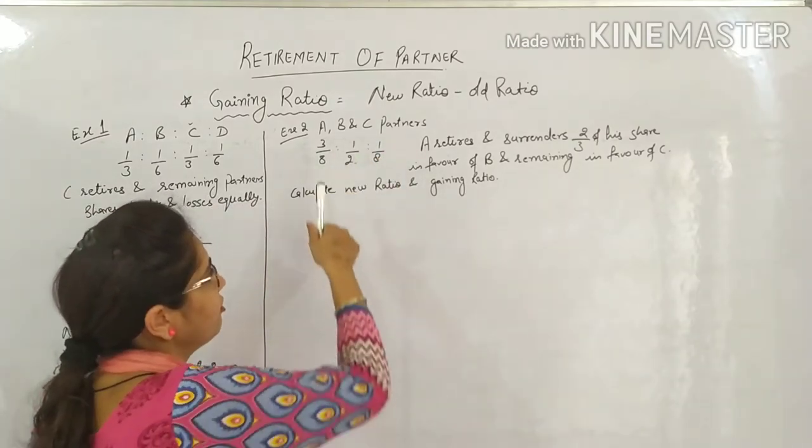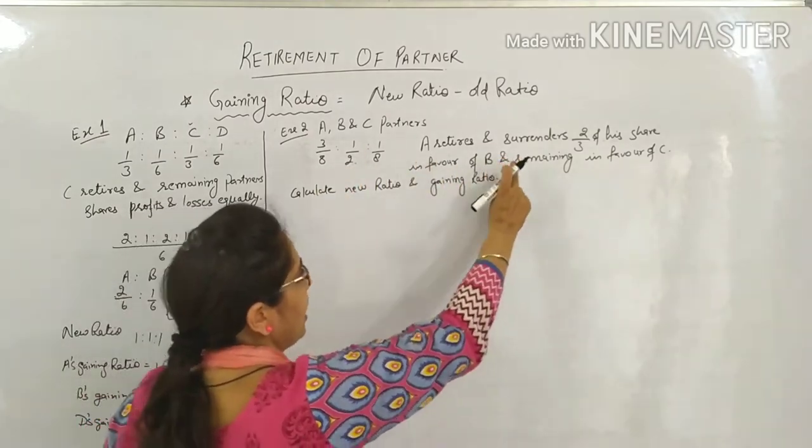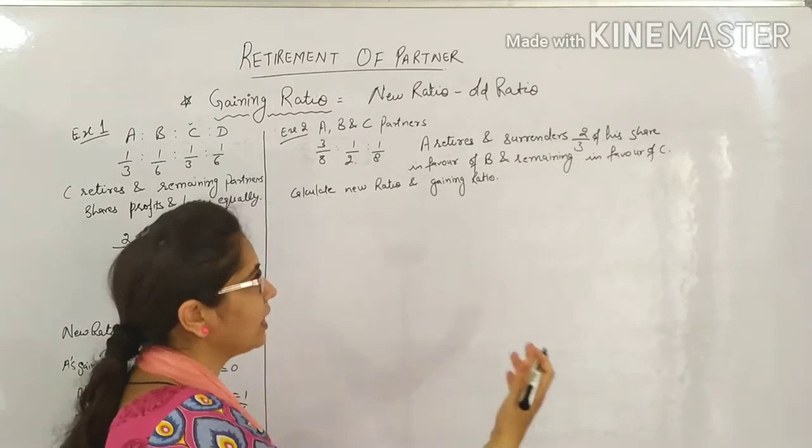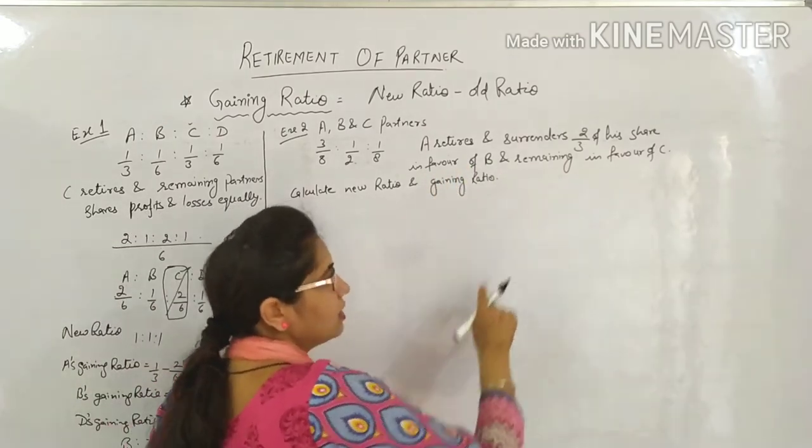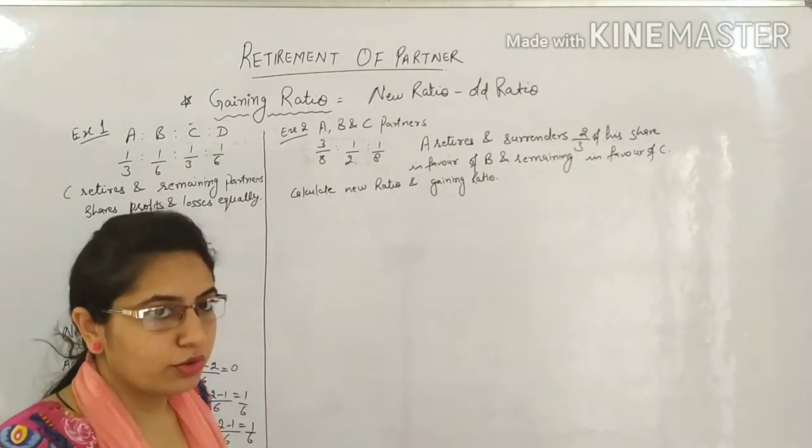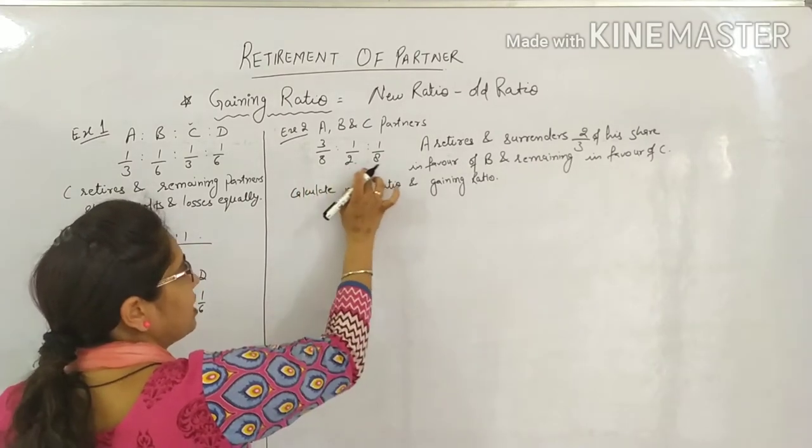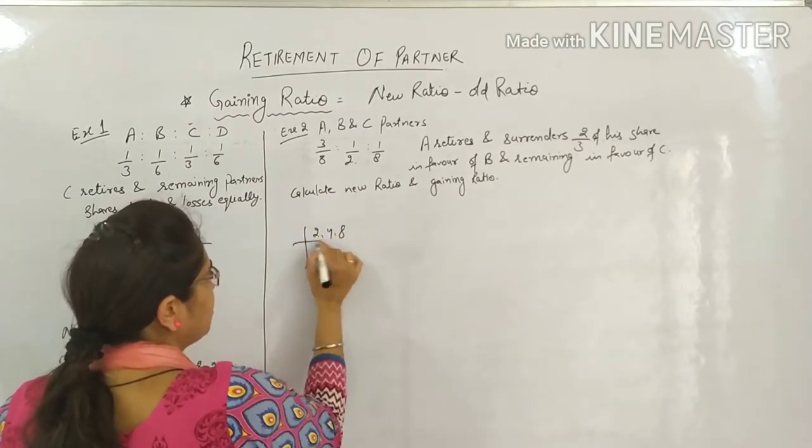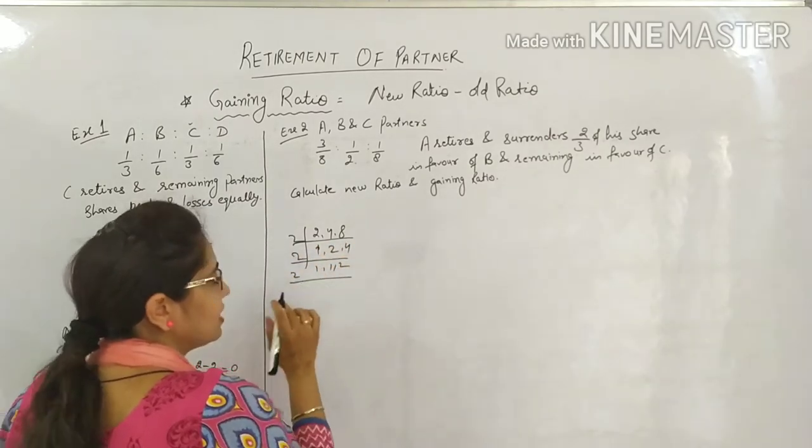Next, let's come to example number 2. Example 2 is that we have ABC, 3 partners with this ratio, and A retires. A retires and surrenders 2 by 3rd of his share in favor of B, and remaining, meaning what's left, that share goes to Mr. C. In the question, there's a slight complication added, but it's not too complicated. First step is to make LCM same. I've taught you how to take LCM: 2, 2, 4, 8 - LCM is 8. And there's another method I've taught you, same table cut. So you took 8 as LCM.